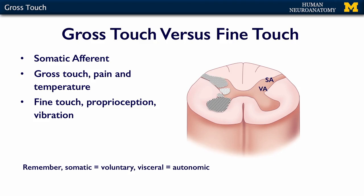We have a couple of different modalities within the somatic system: gross touch versus fine touch. They're both somatic afferents, but they have different patterns. Gross touch is simply an awareness that you've bumped up against something. Gross touch also travels with pain and temperature — hot or cold, any kind of noxious stimulus — and these are grouped together.